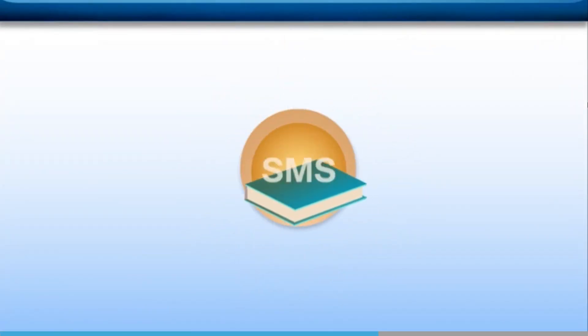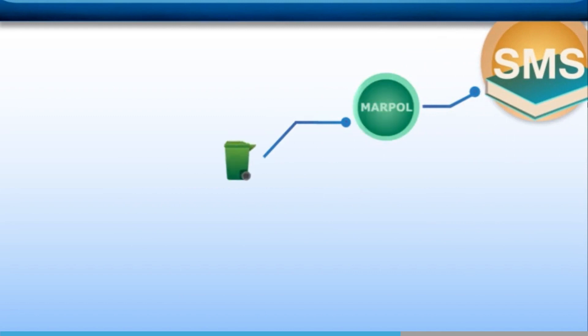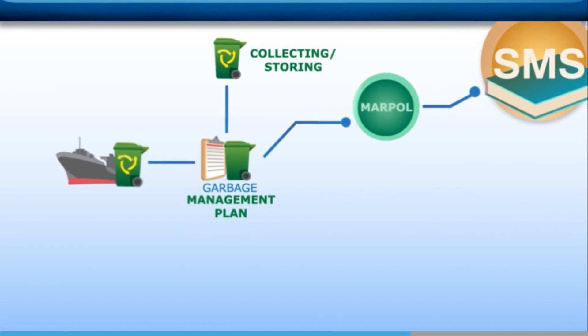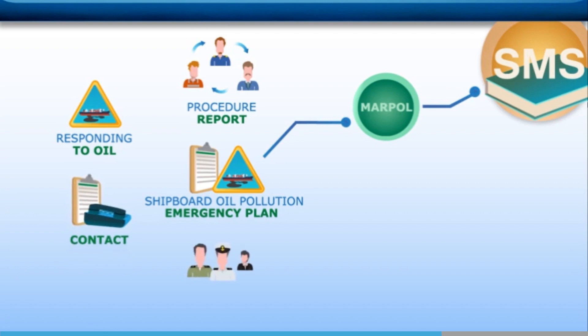The procedures in your SMS manual improve safety and minimise the risk of pollution. These aims are shared by the rules of SOLAS and MARPOL, but they also have some specific requirements for plans and procedures that may be kept separate from your SMS. For example, MARPOL requires most ships to carry a garbage management plan. This contains written procedures for collecting, storing, processing, and disposing of garbage, including the use of equipment on board. It also specifies the person in charge of carrying out the plan. MARPOL also requires a shipboard oil pollution emergency plan. This contains written procedures for reporting and responding to an oil pollution incident, including contact information and procedures for coordinating the ship's response with local authorities.